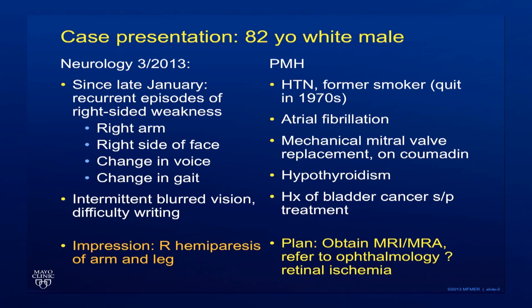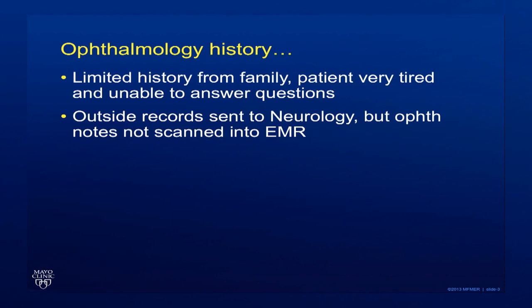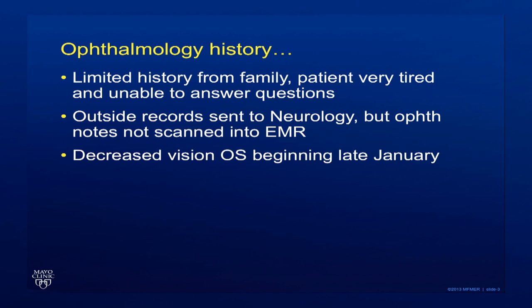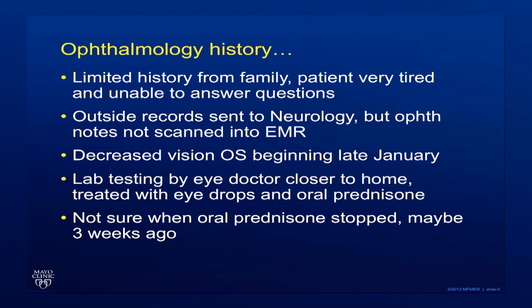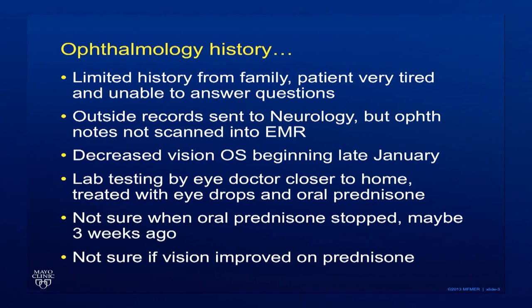His ophthalmology history by the time he reached our clinic was difficult to obtain. He was very tired and we didn't have any outside records at that time. Best we could determine, his decreased vision in his left eye had begun in late January, a few months earlier. He had some testing by his eye doctor closer to home, was treated with eye drops and oral prednisone — it wasn't clear exactly when the prednisone stopped, maybe three weeks prior to our exam — and he really wasn't sure if his vision had improved on the prednisone.